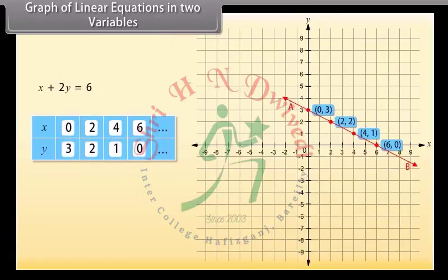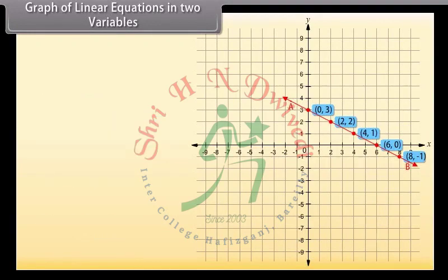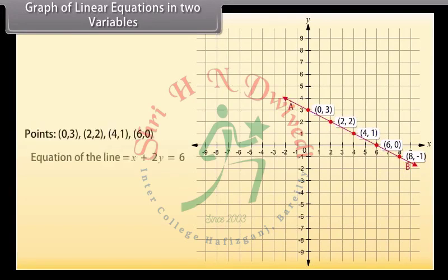Now pick another point on this line — let us pick (8, minus 1). Is this a solution of the equation? Yes, because by substituting X as 8 and Y as minus 1, we get the answer 6. So (8, minus 1) is a solution. What we have observed is that every point whose coordinates satisfy the given equation lies on line AB, and every point on line AB gives a solution of the equation. So every point on the line satisfies the equation, and every solution of the equation is a point on the line.